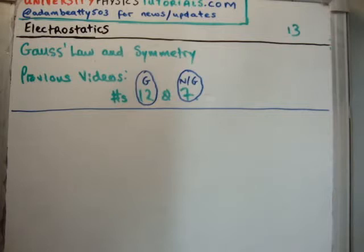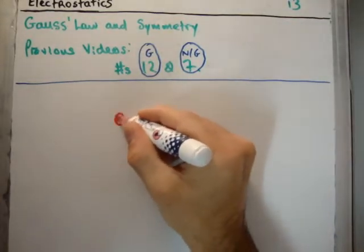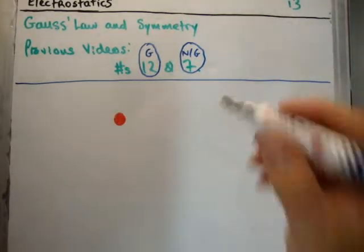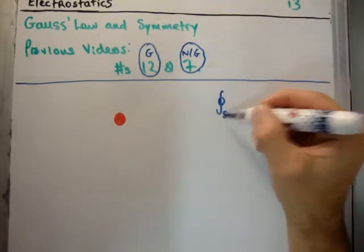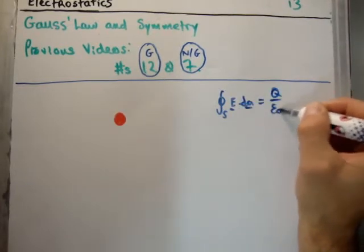So I'd like to remind you why it wasn't a pain in the face to use Gauss' law in video number 12. What we had was a charged conducting sphere, like this, a uniformly charged conducting sphere. And we then had to use Gauss' law, which of course is the closed surface integral of E dot dA equals Q enclosed over epsilon zero.